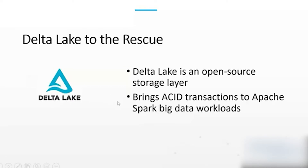Delta Lake is definitely an open source storage layer, and it brings ACID transactions to Apache Spark big data workloads. The key features of Delta Lake include ACID transactions, scalable metadata handling, unified batch and streaming — which is a big deal — schema enforcement, time travel, data versioning, and upserts and deletes on your data. Finally, it's 100% compatible with Apache Spark, which makes sense because the people that developed Apache Spark also developed Delta Lake.